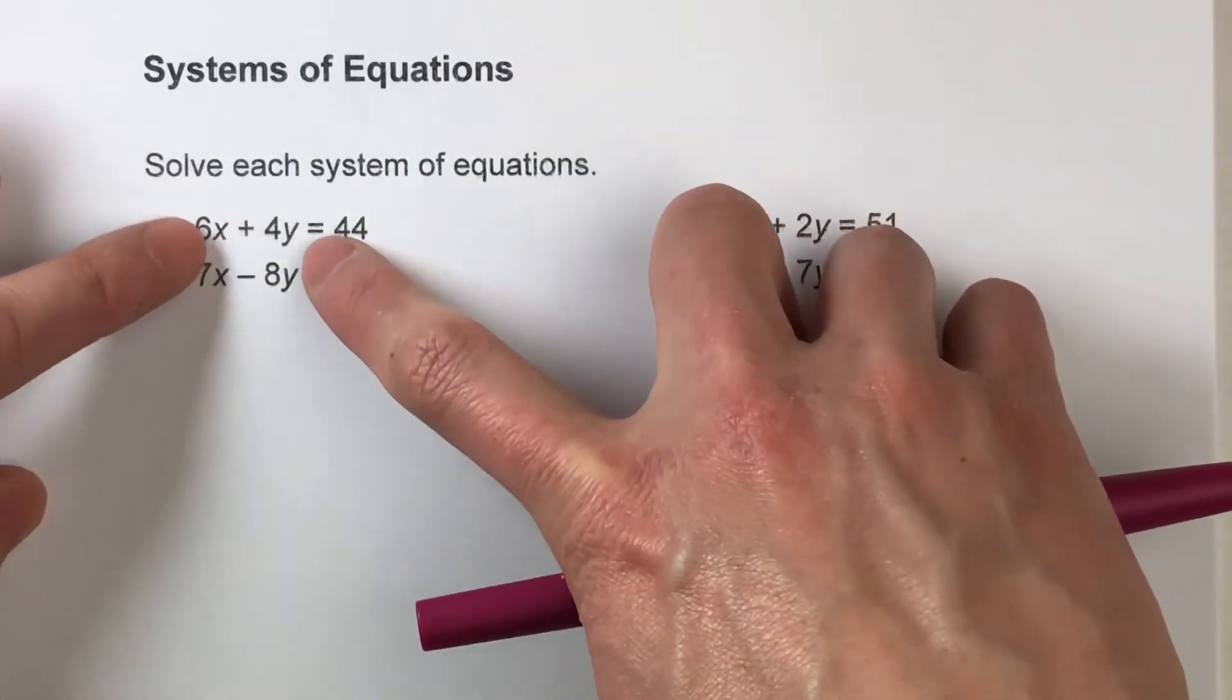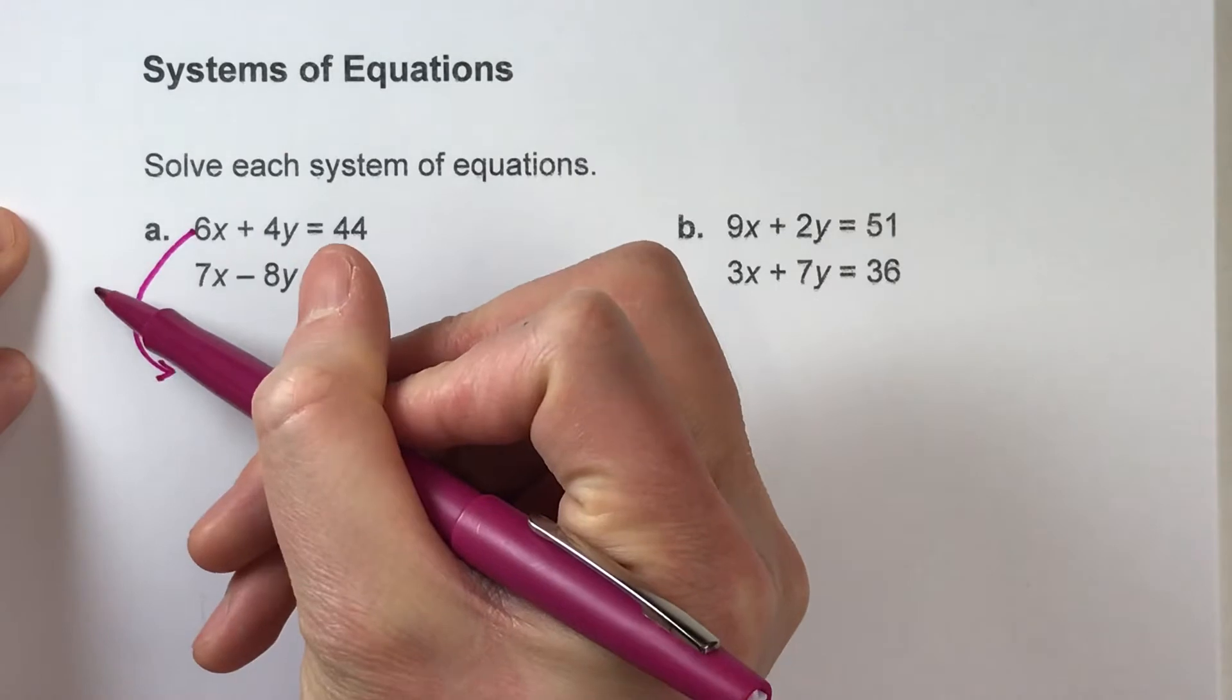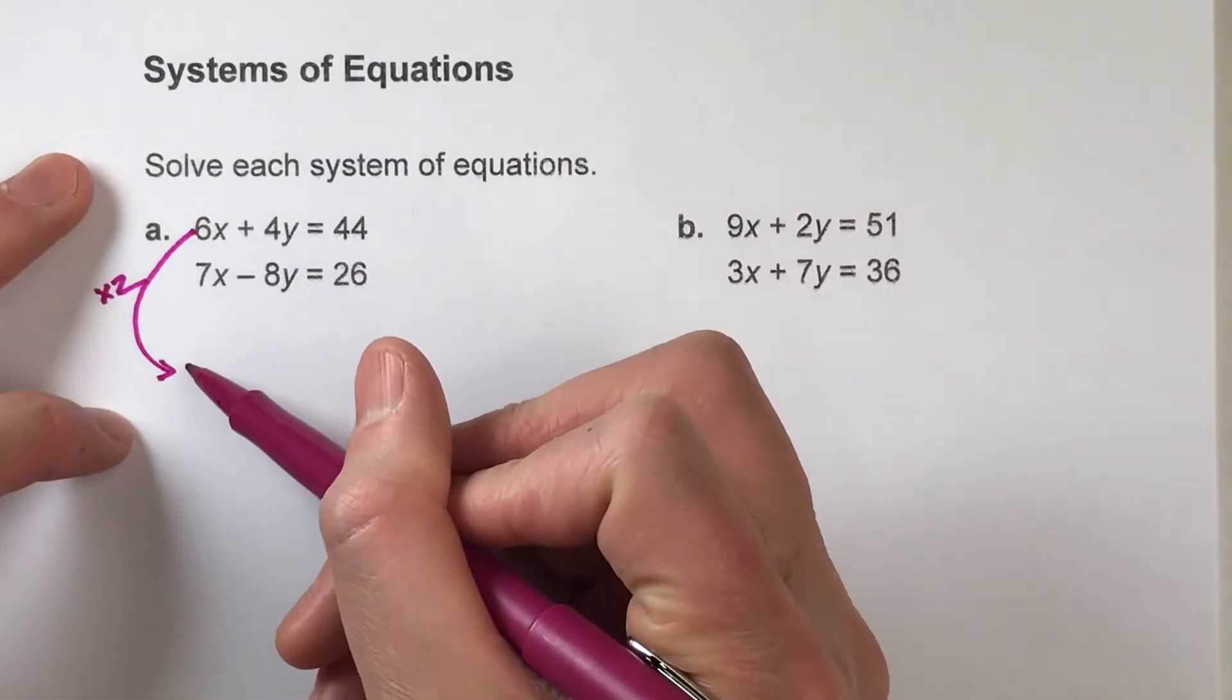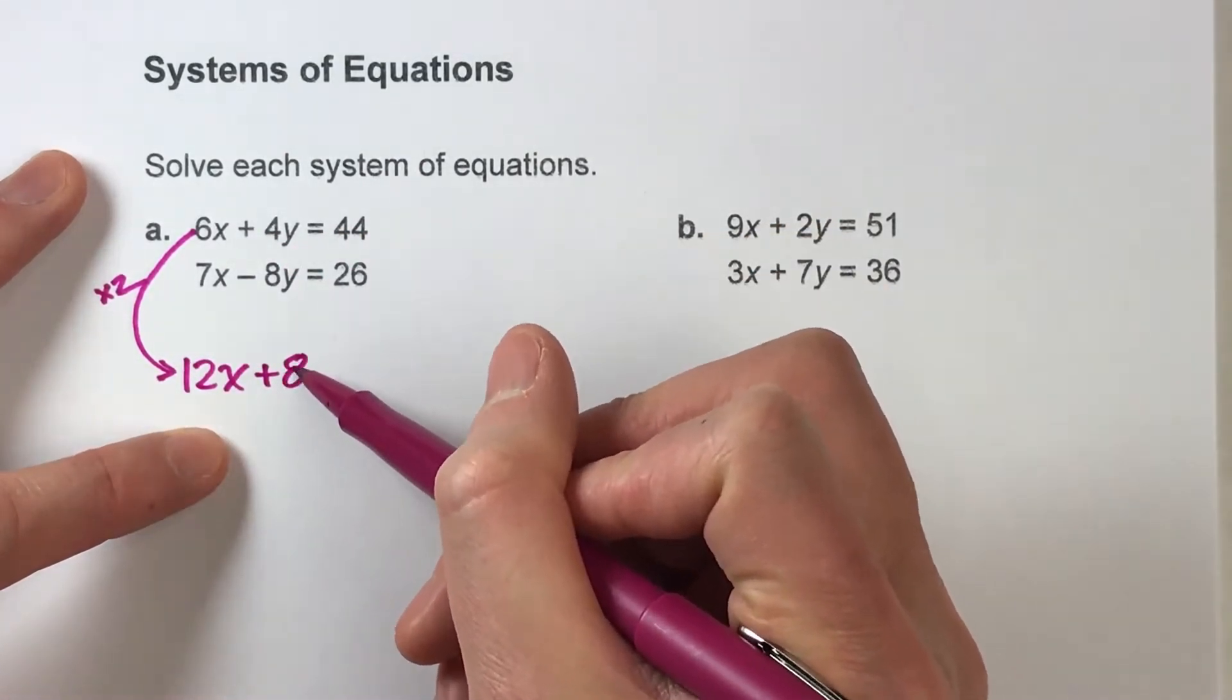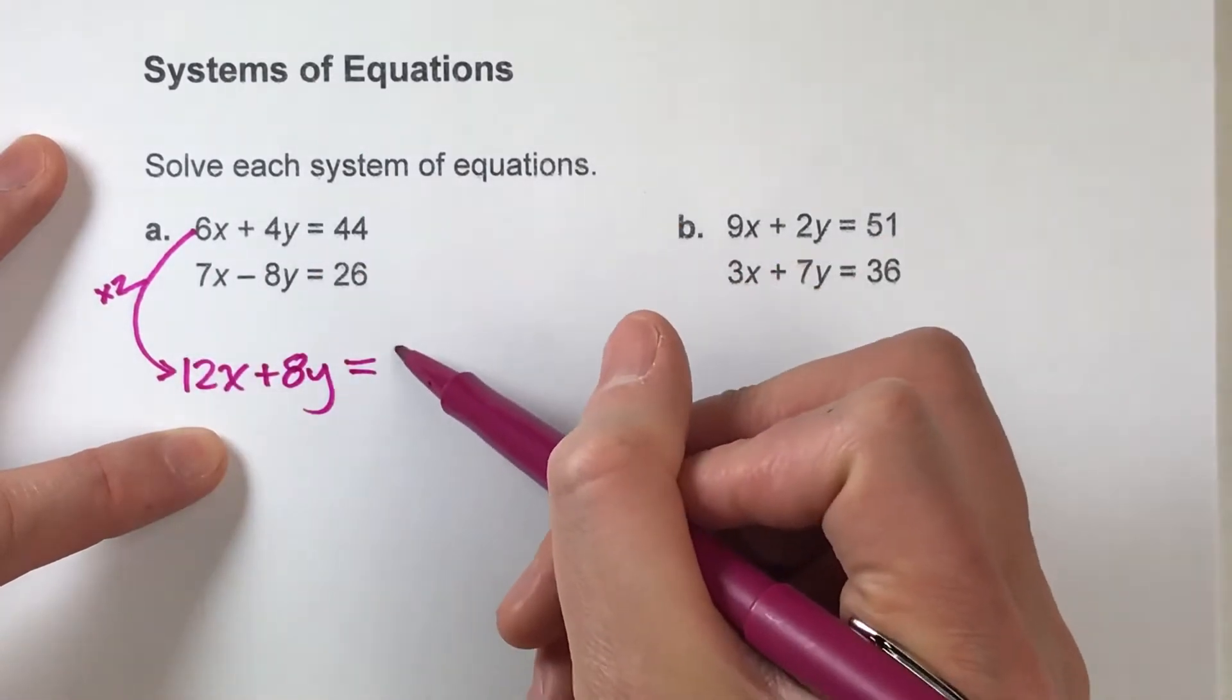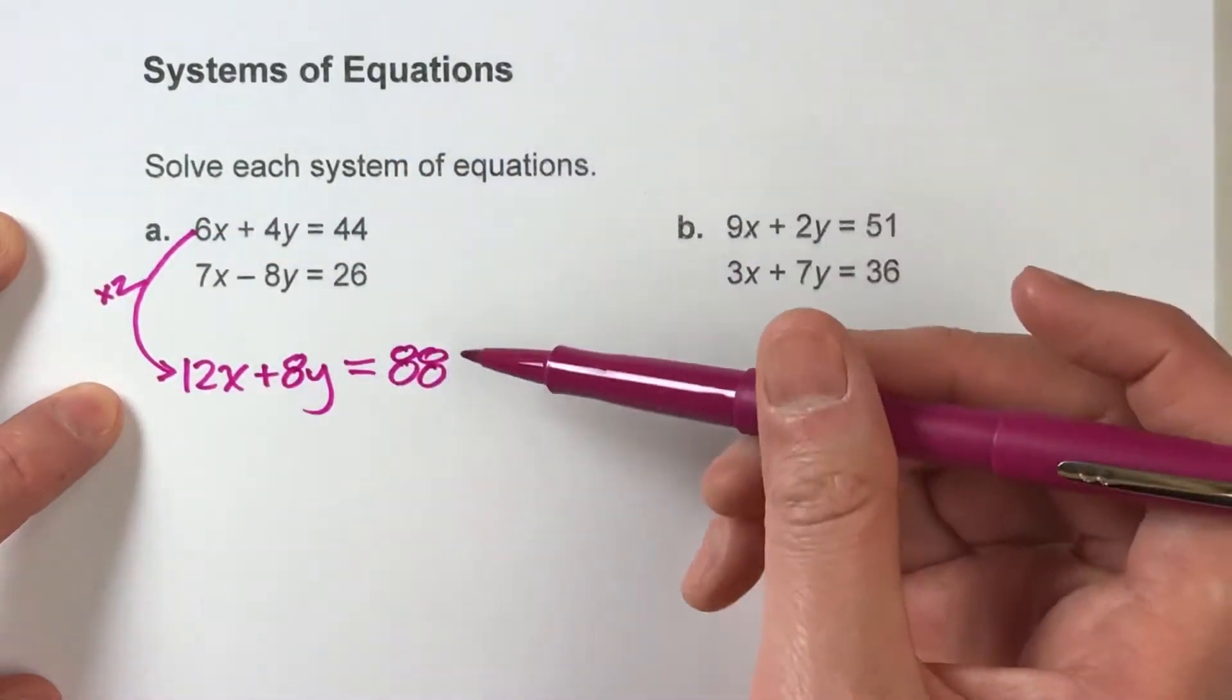If I take this first equation and multiply it by 2, then this new equation's gonna be 12X because 6X times 2, plus 8Y because 4Y times 2, equals 88 because 44 times 2. All I'm doing is multiplying both sides of this equation by 2 to get this.